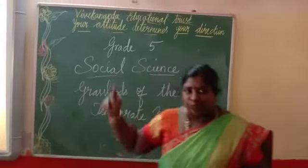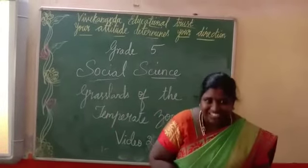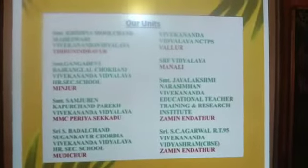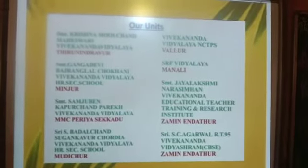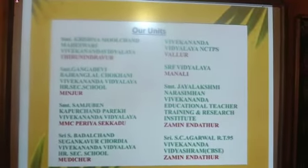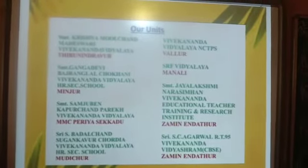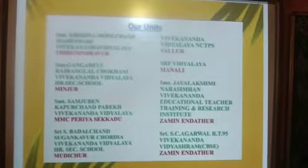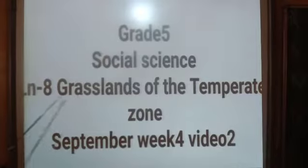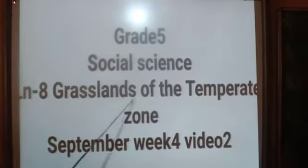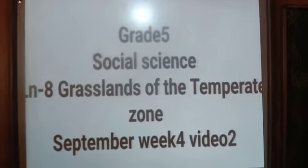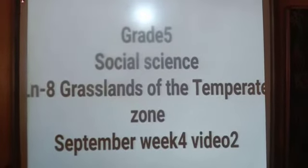Before we move on to the topic, shall we do a small activity? Are you ready to say the answer, children? Tell me your topic name. Grasslands of the temperate zone. Yes, shall we do the activity? Look at the board, children. This is your topic: Lesson number 8, Grasslands of the Temperate Zone. This is your second video of week 4.